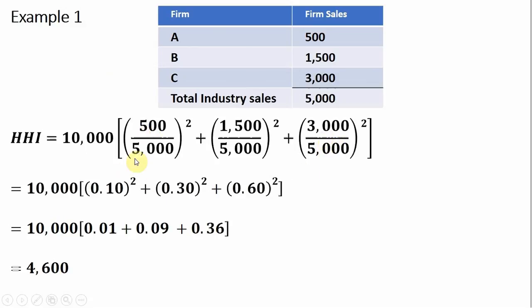Doing the math here, firm A accounts for 10% of the industry sales, and again we're squaring it. Firm B accounts for 30% of the industry sales, and firm C accounts for 60% of the industry sales. So after squaring each of the terms in the brackets, we get this. Summing up the values in the brackets, we'll get 0.46 times 10,000, or 4,600. So the Herfindahl-Hirschman Index for this industry is 4,600.